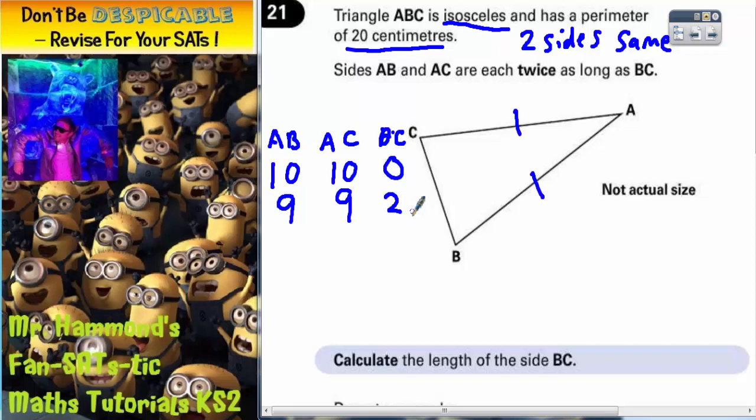Now what we're looking for is a pair of sides AB and AC which are twice as long as this one. Well 9 isn't twice as long as 2, so that doesn't work. So let's try 8.